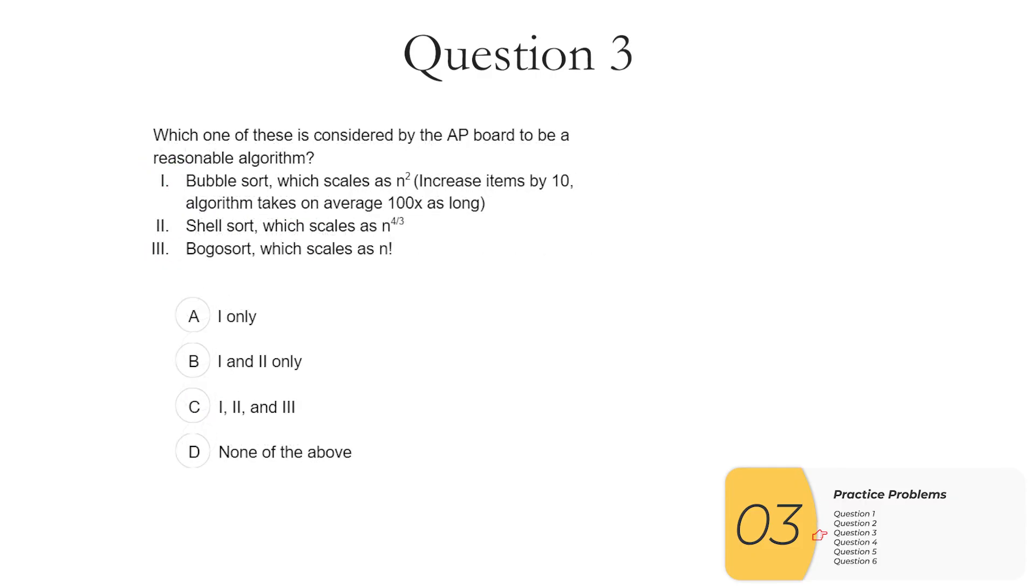Question three: which one of these is considered by the AP board to be a reasonable algorithm? Bubble sort, which scales as n squared? Shell sort, which scales as n to the 4 thirds? Or BOGO sort, which scales as n factorial? So this is a pretty similar problem to the last one. We know that polynomials, n squared, n cubed, and fourth are okay. n to the 4 thirds, this is a little bit of a trick because the power is not an integer. But 4 thirds is still polynomial. And so this is good. n factorial is not okay, though. AP board has said factorials are not okay. So in this problem, we see the factorial. In the previous problem, we saw the exponent. And the answer here is B.